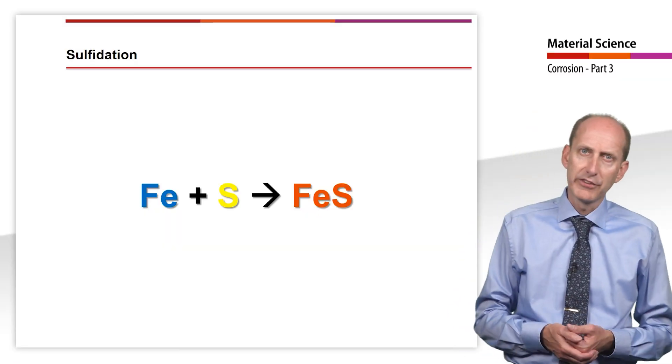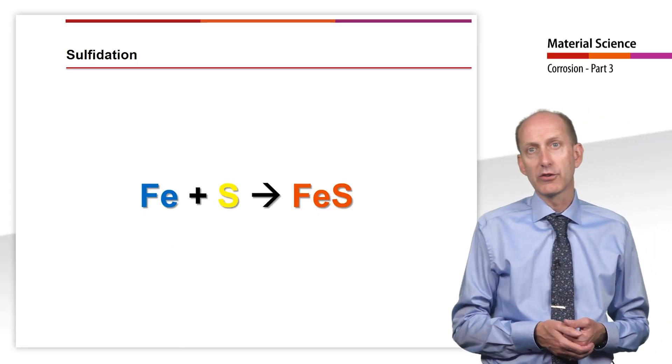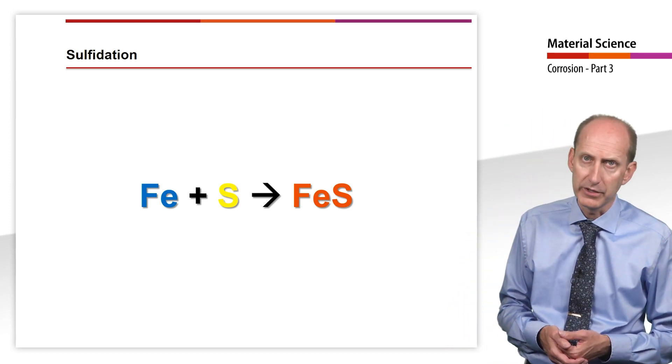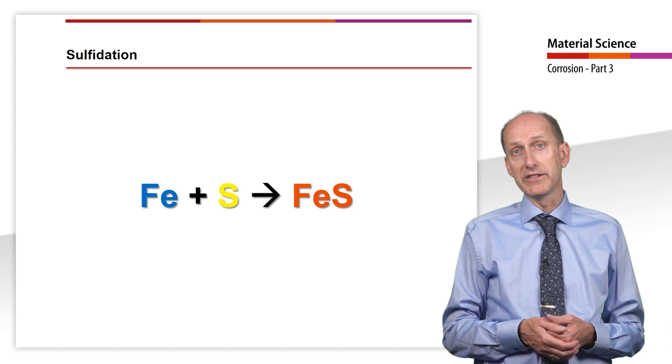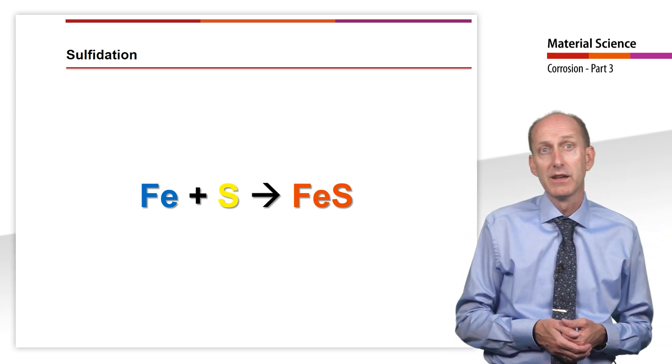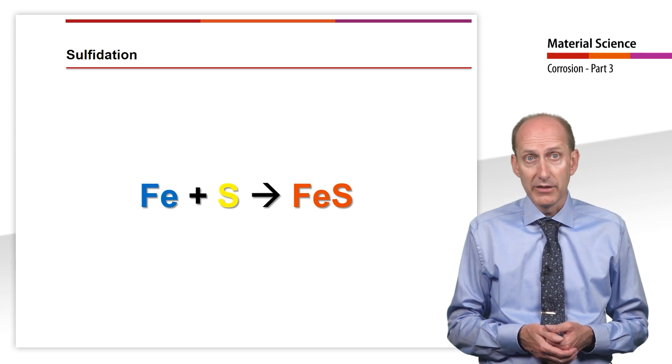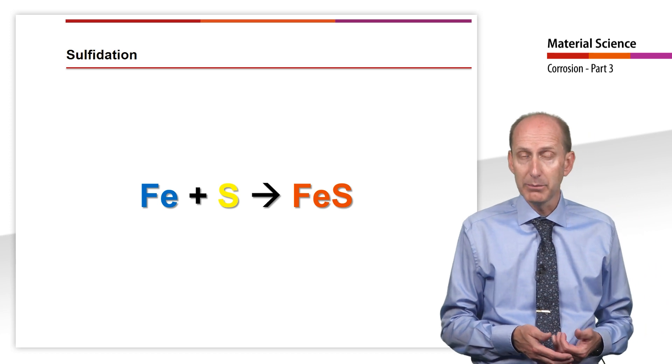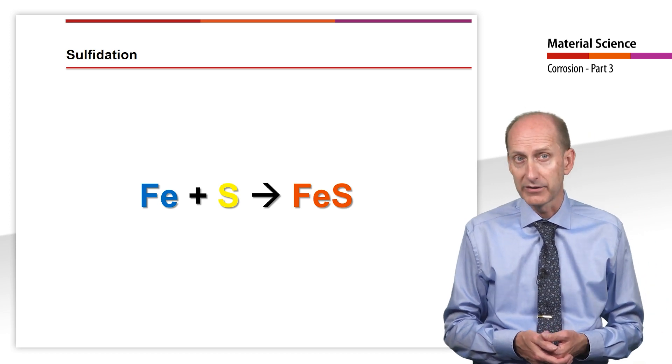Hydrogen sulfide, H2S, is considered a particularly aggressive medium in the chemical industry. If the chromium content is low, rapid and severe sulfidation can occur in an atmosphere containing H2S. That is to say, the iron reacts to form iron sulfide. Fe plus S reacts to FeS.